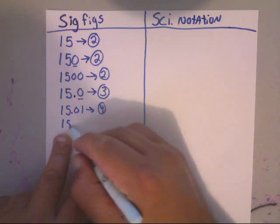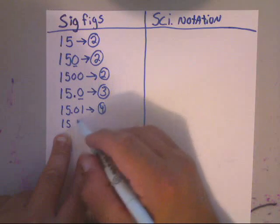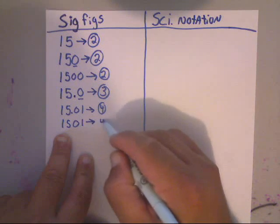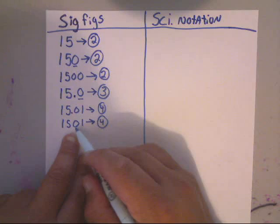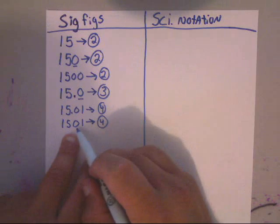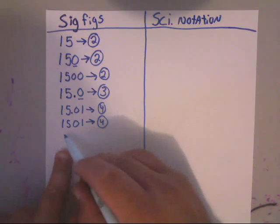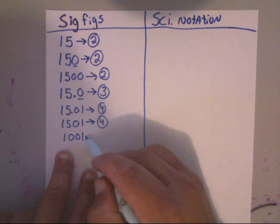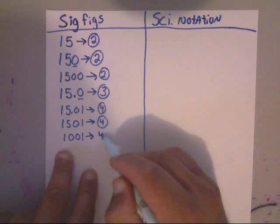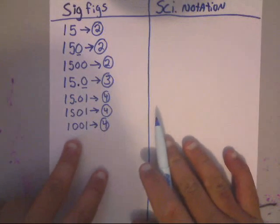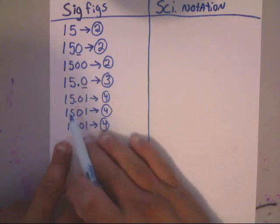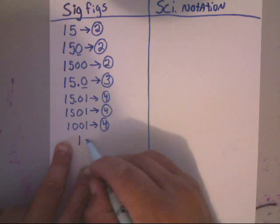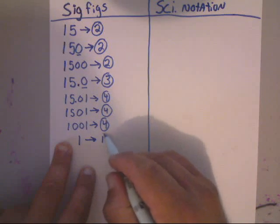If you have 15.01, that is four sig figs. Now, if you have the number 1501, that is still four sig figs as well, because notice that this zero is trapped. If a zero is trapped, it becomes significant. So the number 1001 is also four sig figs.